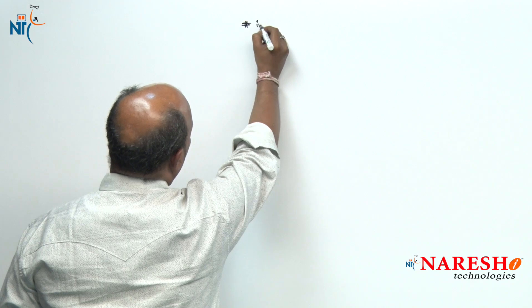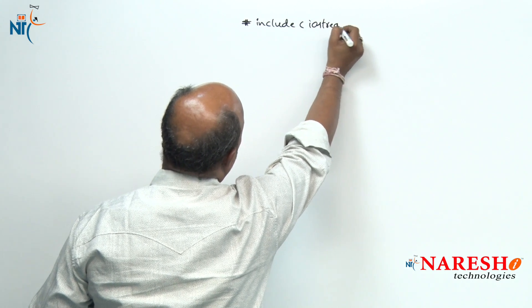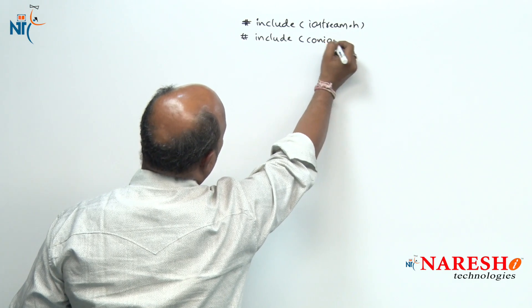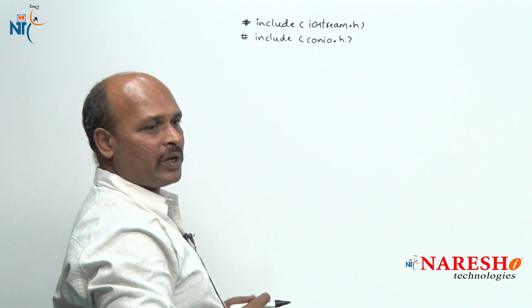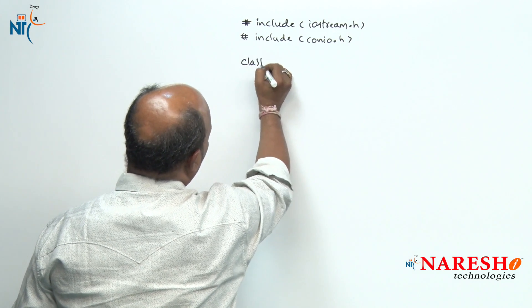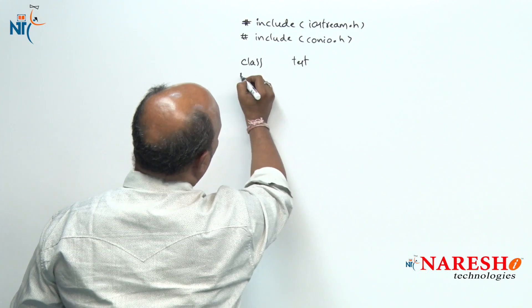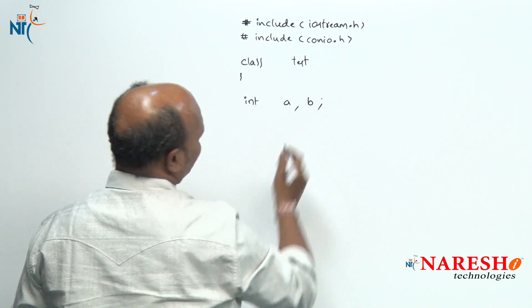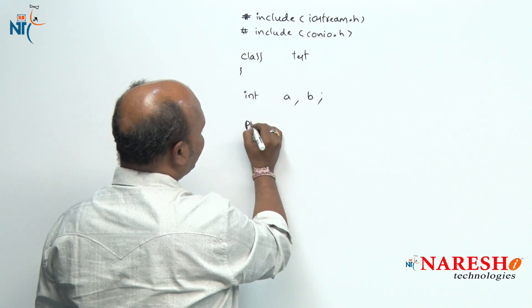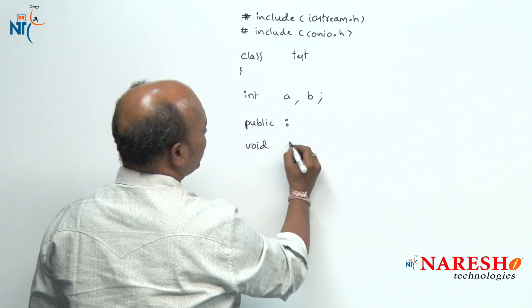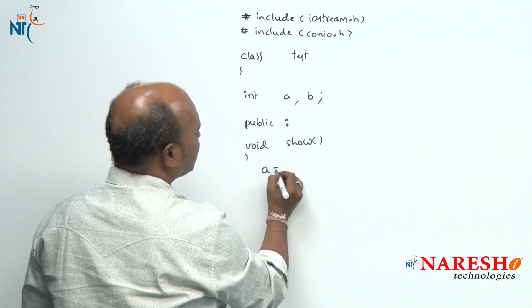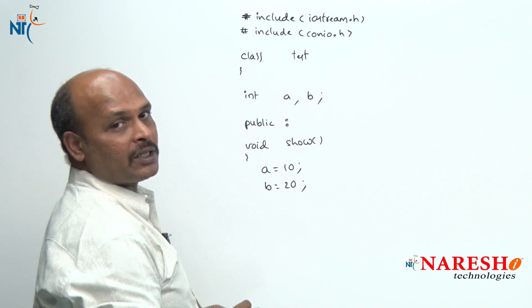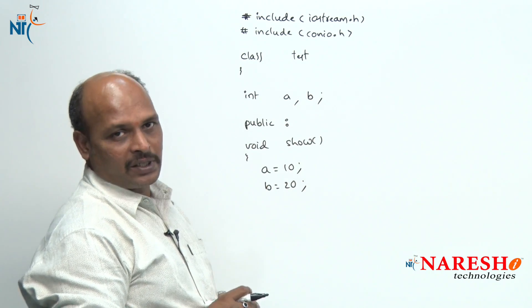Now I will give you a practical example on `this` pointer — how to use it in programming. We have `#include<iostream.h>` and `#include<conio.h>`. A class called `test` is declared with two data members `a` and `b`. In the public area, there is a `void show()` function where `a` is assigned 10 and `b` is assigned 20, and I want to print the object address.